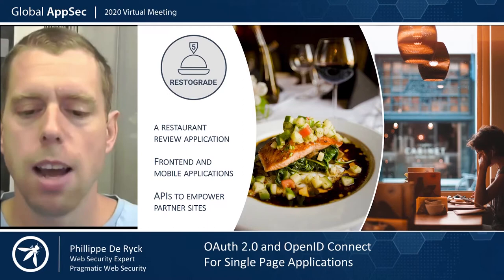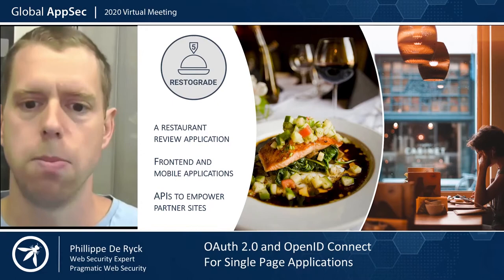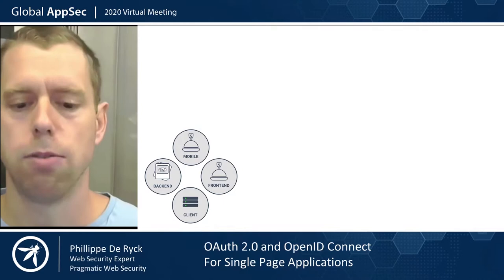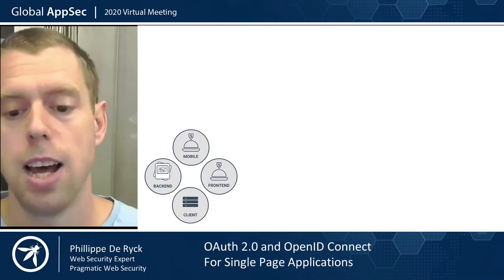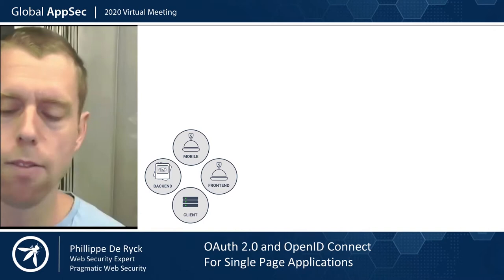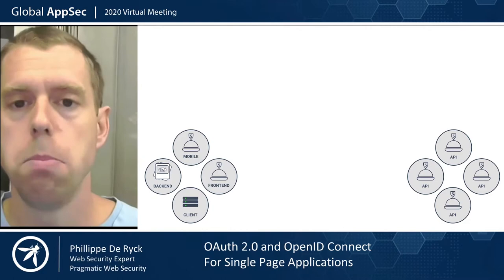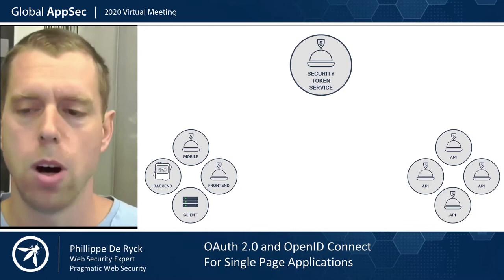Before we dive into details, I want to give you a small introduction to OAuth and OpenID Connect, just so we're on the same page. In this image, you can see the different stakeholders in an OAuth or OpenID Connect flow. You have a bunch of clients — different client types such as a back-end application, a mobile app, a front-end web app, or even a client with no user involved, such as a batch script. You have a bunch of APIs that need to be protected, and in the middle, the glue between all of this is a security token service, also known as an authorization server in OAuth terminology.